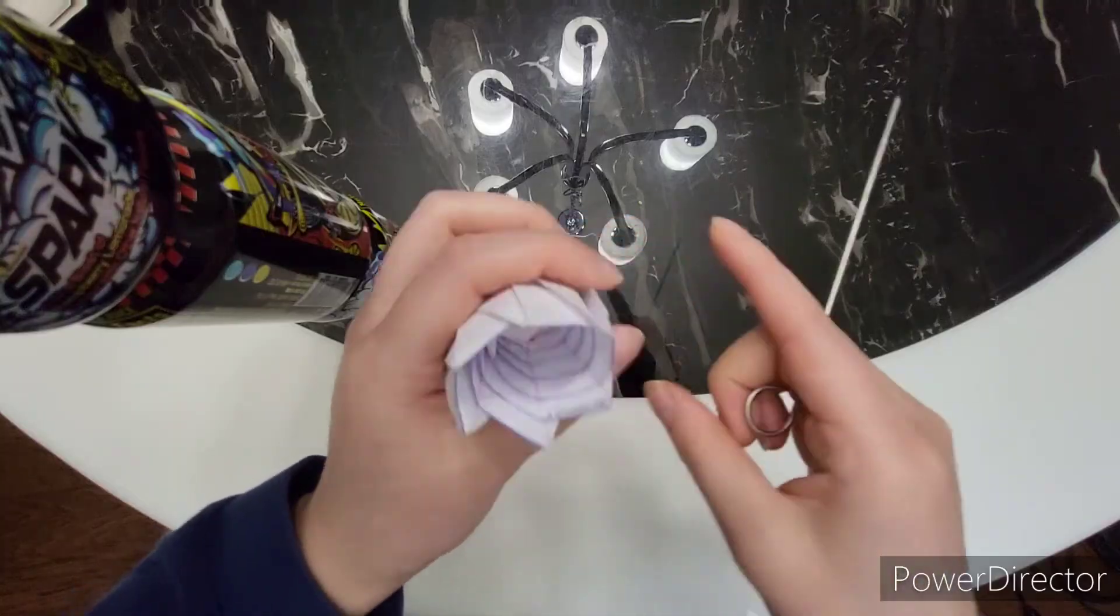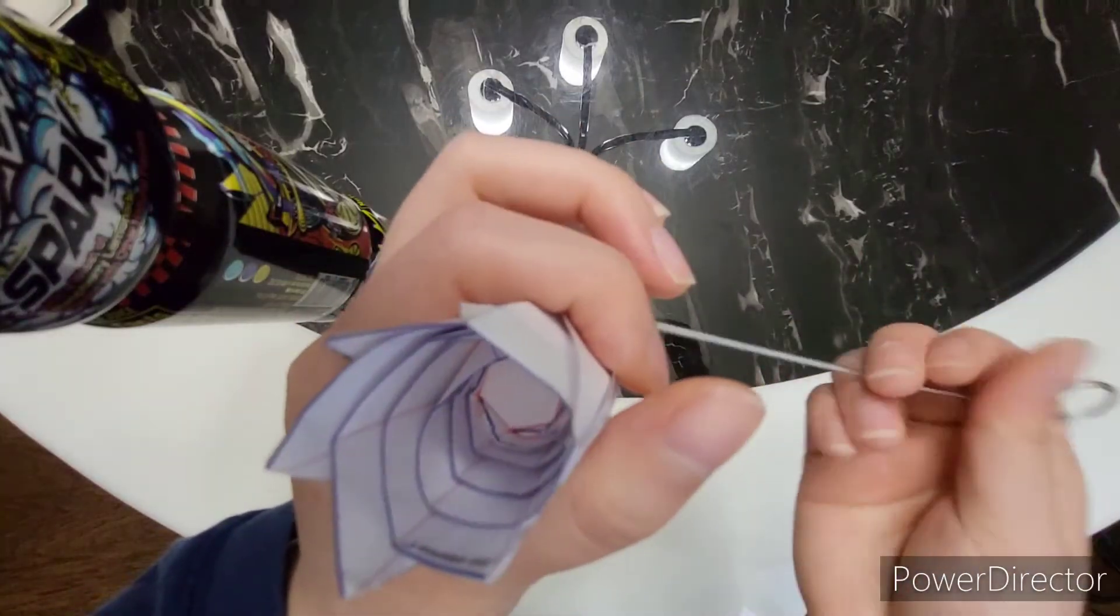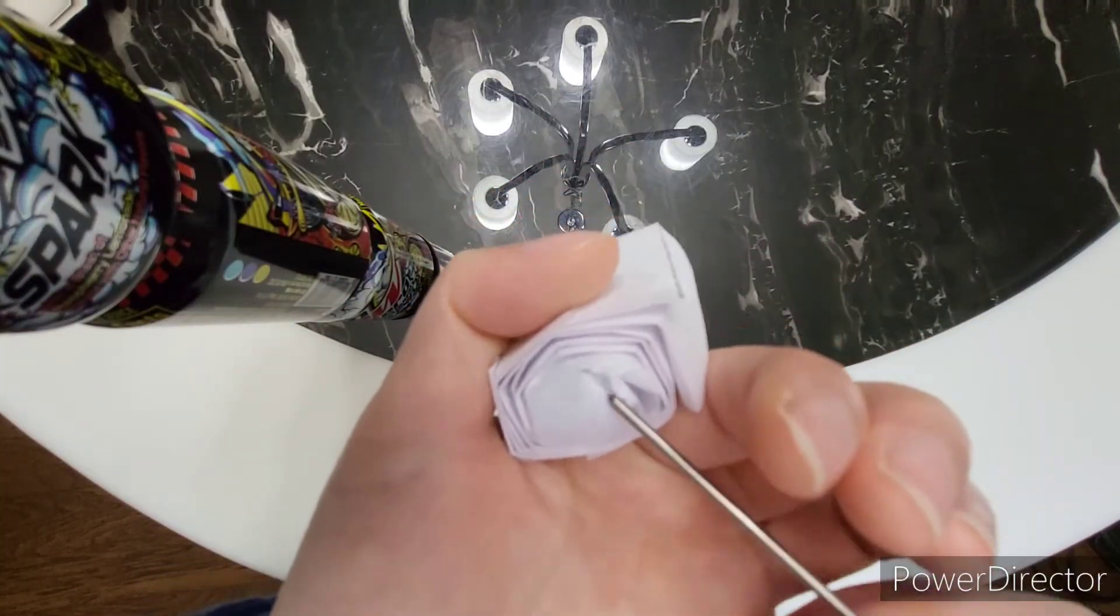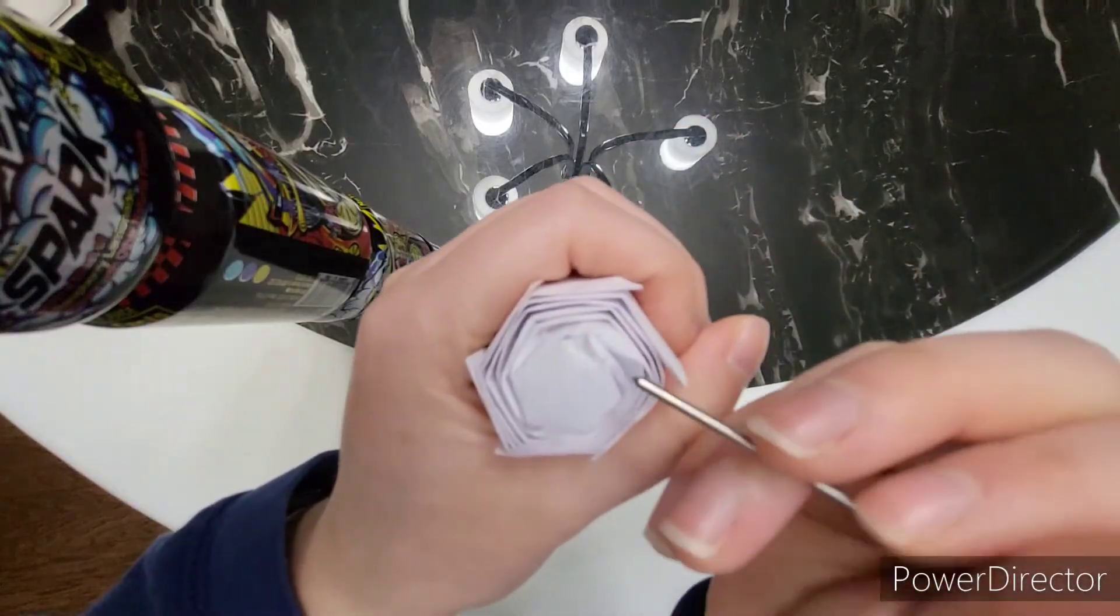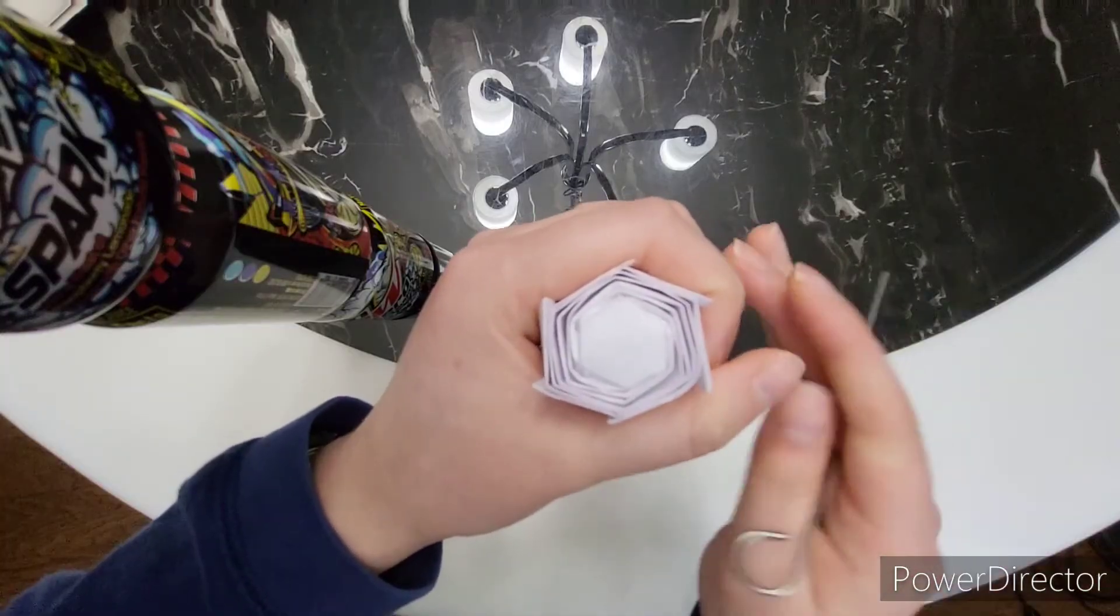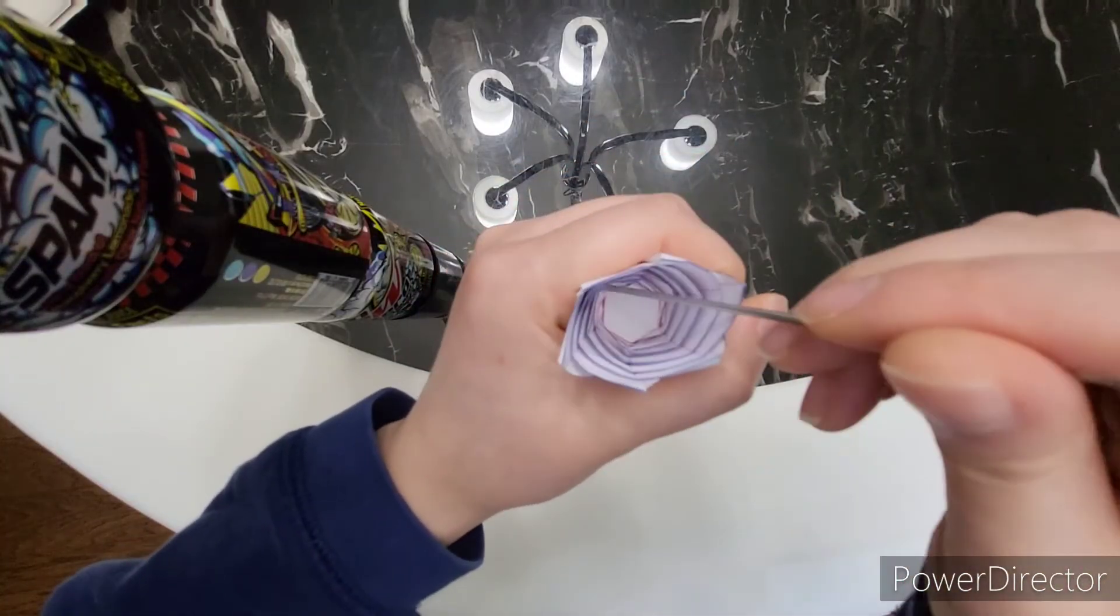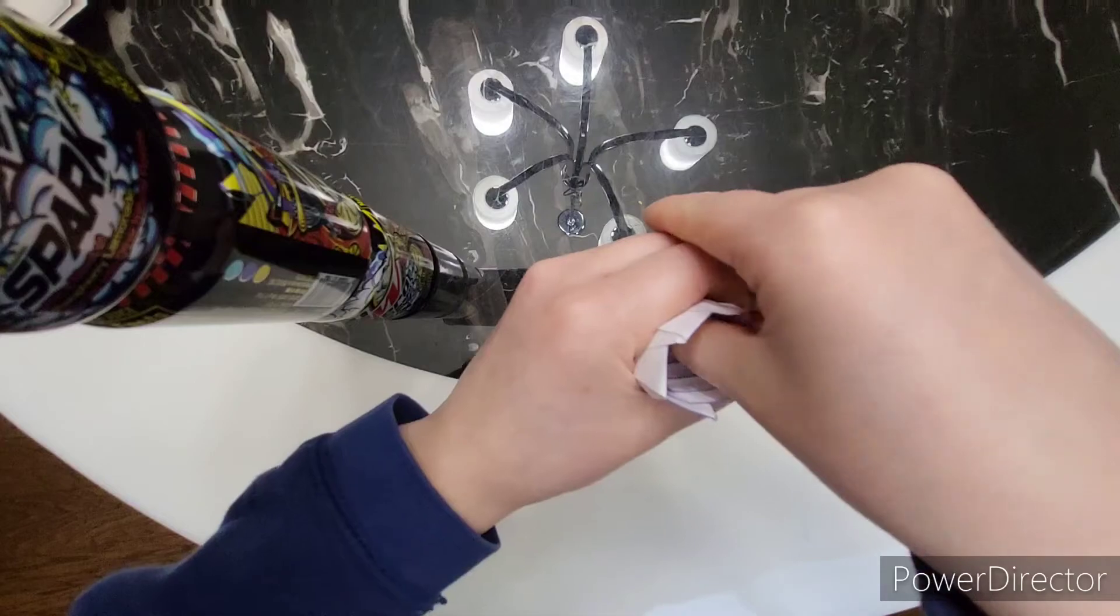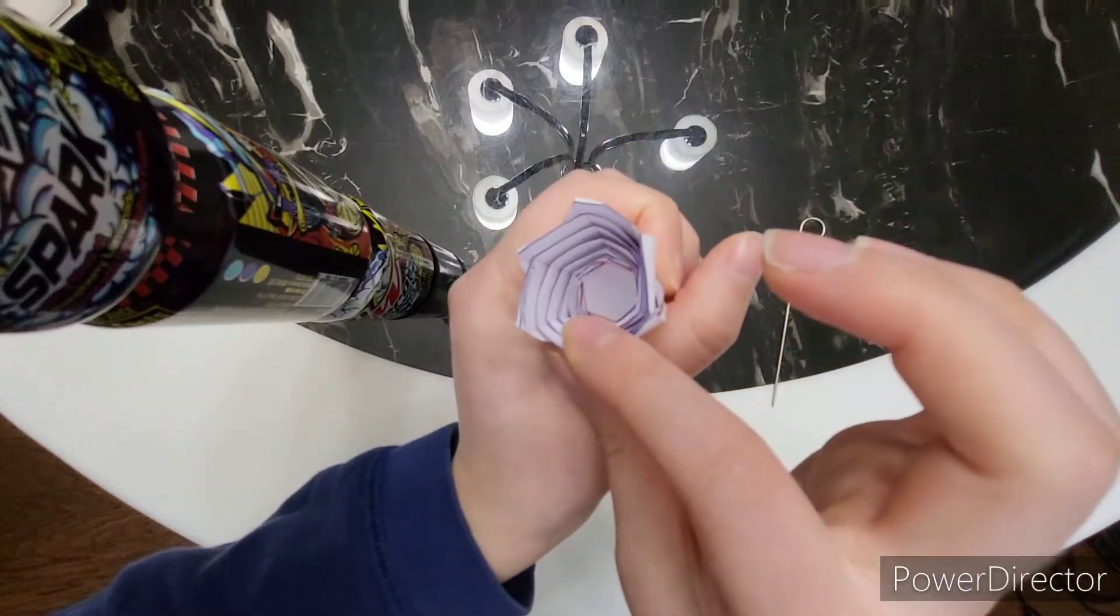Okay, so here you can see me making sure that the sides of the hexagons are creased as can be. Then I crease the sides with my fingertips for the final touch.